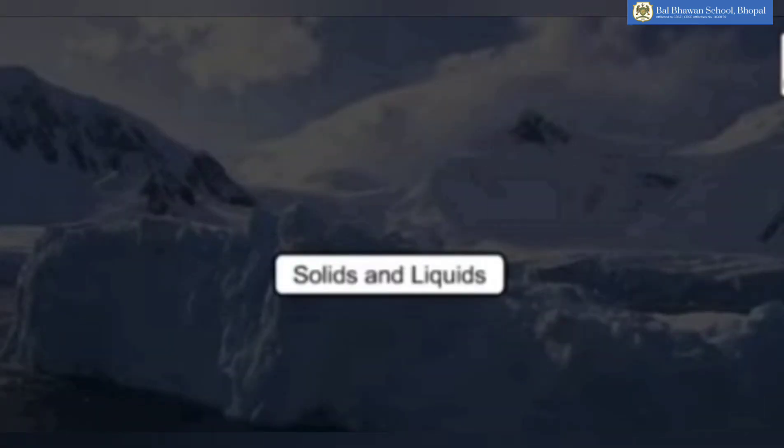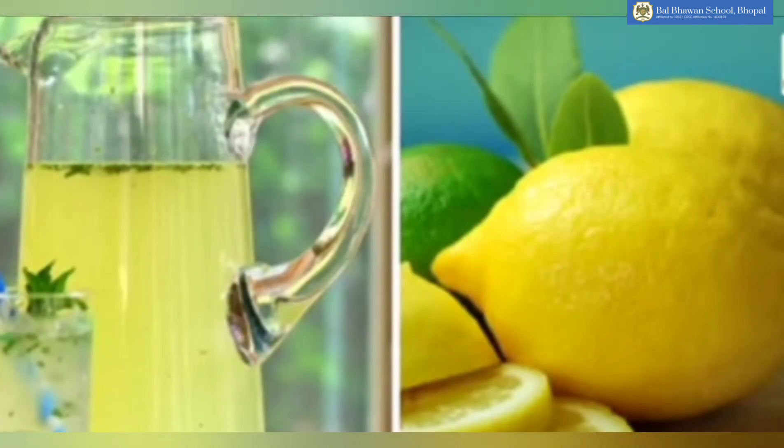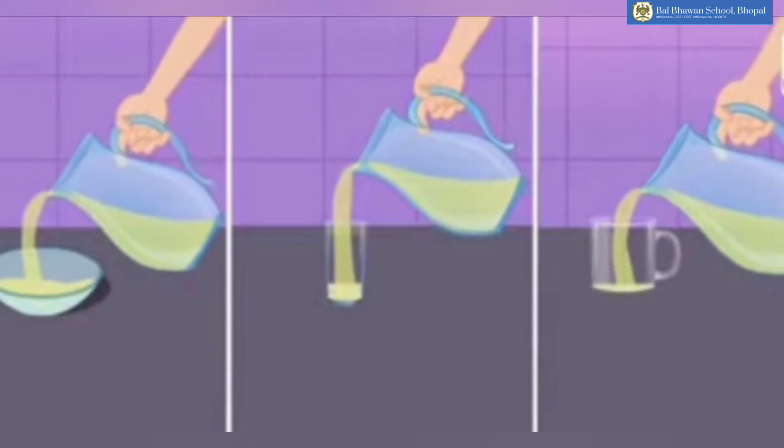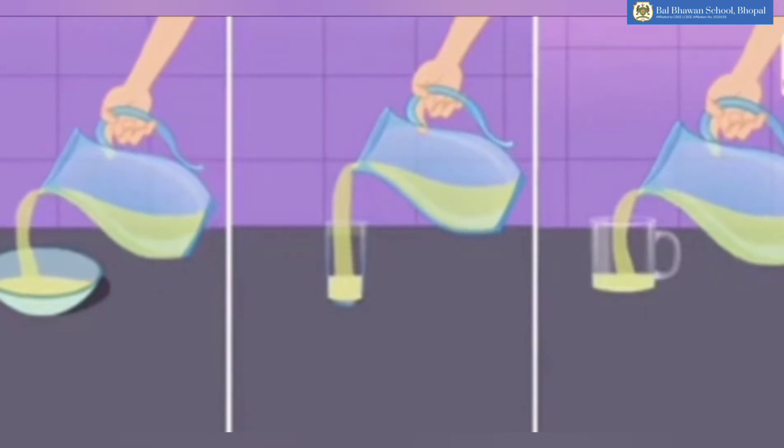Let us see what are solids and liquids. Lemonade is a liquid and lemons are solid. Liquids take the shape of the containers. It has no shape of its own.